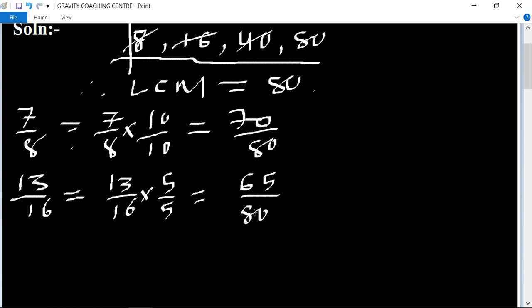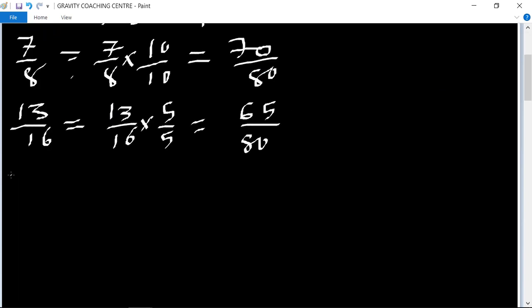Another one is 31 upon 40. 31 upon 40 multiplied by 2 upon 2 equals 62 upon 80.